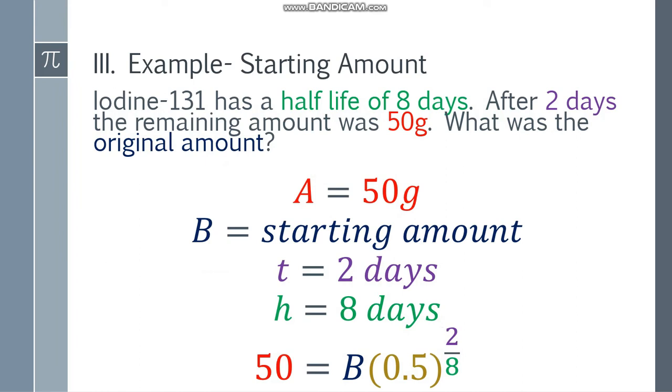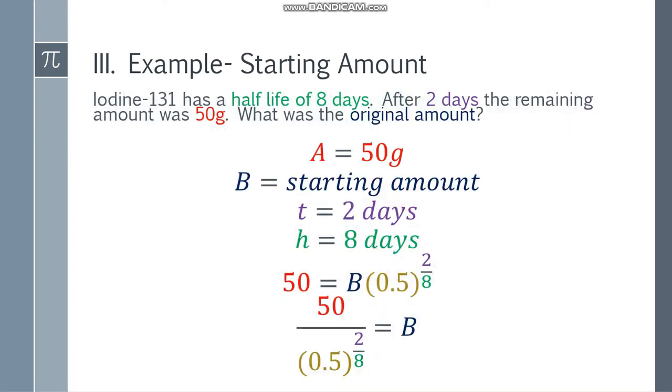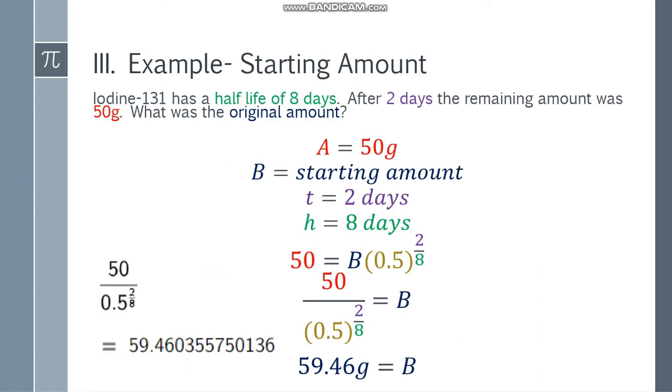Ngayon we need to solve for B. So algebraically, i-baba mo lang tong buo na to dito sa baba ng 50. That will be 50 over the quantity 0.5 to the 2 over 8. So again, you have to use a calculator with this one. And sabi ng calculator, the answer will be 59.4603